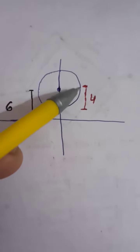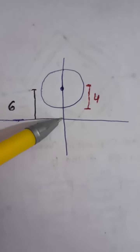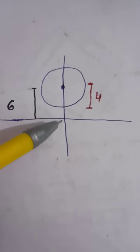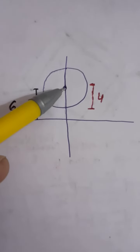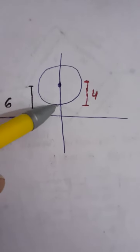We have to find the equation of the circle. The center is at six unit distance - you can see that six unit distance - and the radius is four units.